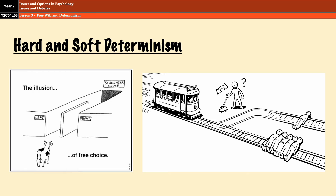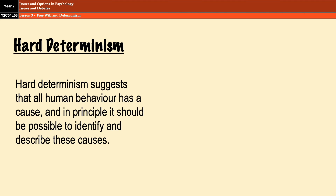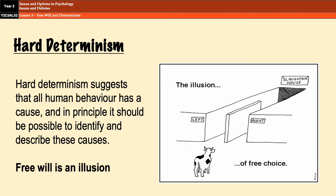There are two main types of determinism: hard determinism and soft determinism. Hard determinism suggests that all human behavior has a cause, and in principle it should be possible to identify and describe that cause. The assumption is that everything we think and do is set out and determined by internal or external forces that are beyond our control. Another basic assumption of hard determinism is that free will is nothing but an illusion — you might think you have control, but actually you don't. Everything has been predetermined for you.